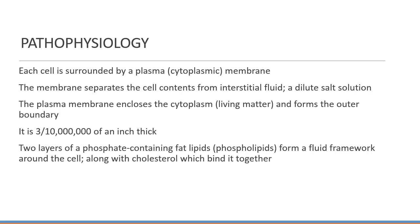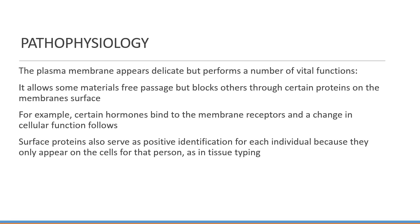Each cell is surrounded by a plasma or cytoplasmic membrane. This membrane separates the cell contents from interstitial fluid, which is a dilute salt solution. The plasma membrane encloses the cytoplasm, which is the living matter, and forms the outer boundary. It's three ten-millionths of an inch thick. There are two layers of phosphate-containing fat lipids — phospholipids — that form a fluid framework around the cell, all bound together with cholesterol. The plasma membrane allows free passage to some materials but blocks others through certain proteins on the surface. Certain hormones bind to membrane receptors and a change in cellular function follows. Surface proteins also serve as positive identifiers for each individual, as in tissue typing.